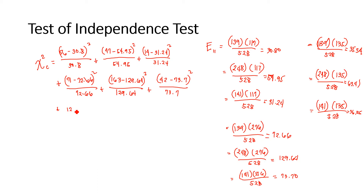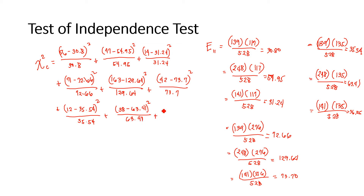Continuing the formula: plus (12 minus 35.54) squared over 35.54, plus (85 minus 36.05) squared over 36.05. We can now use the calculator to get the total value.